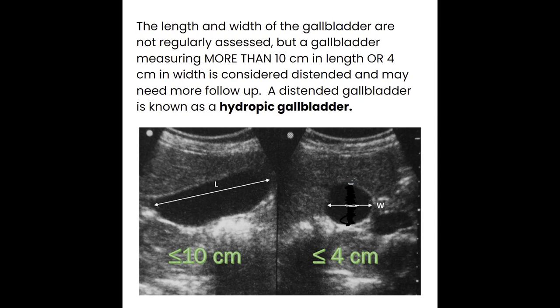We don't typically measure gallbladder length or width routinely, but the normal gallbladder should not measure more than 10 centimeters in length or more than 4 centimeters in width. If it exceeds these measurements, it is a distended or hydropic gallbladder, which could be due to a stone or a malfunctioning gallbladder — worth noting on the report.